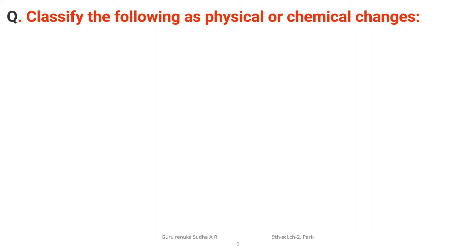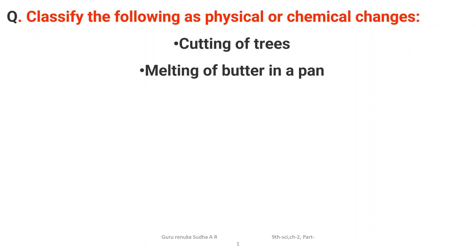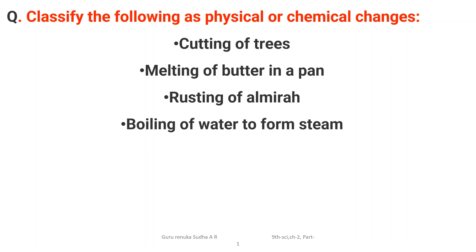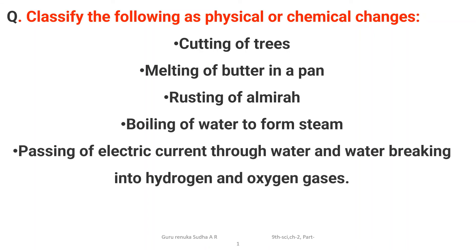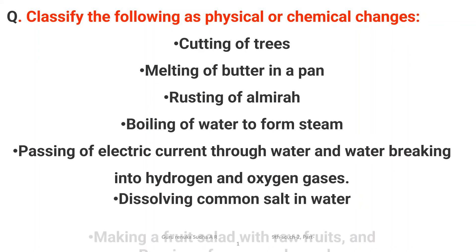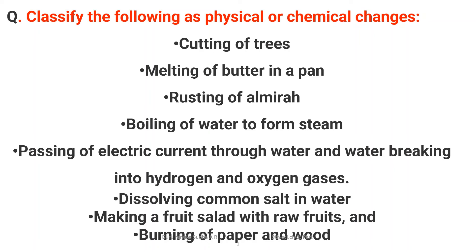The next question asks to classify the following as physical or chemical changes: cutting of trees, melting of butter in a pan, rusting of almirahs, boiling of water to form steam, passing electric current through water causing it to break into hydrogen and oxygen gases, dissolving common salt in water, making a fruit salad with raw fruits, and burning of paper and wood.